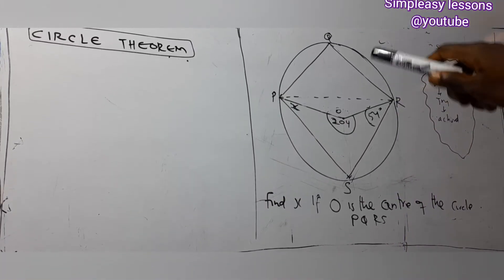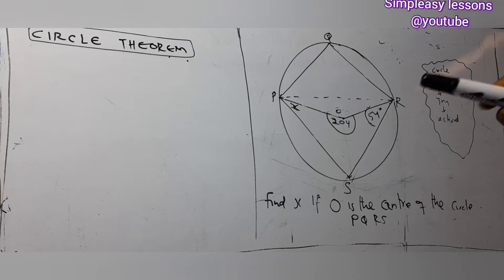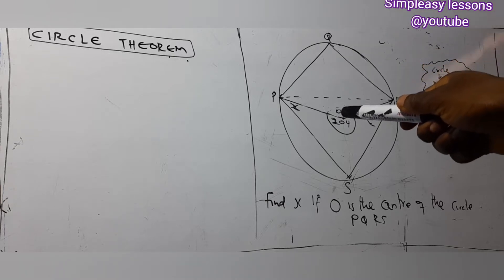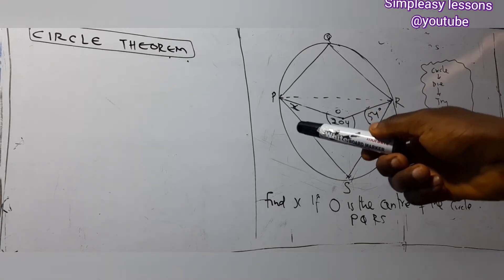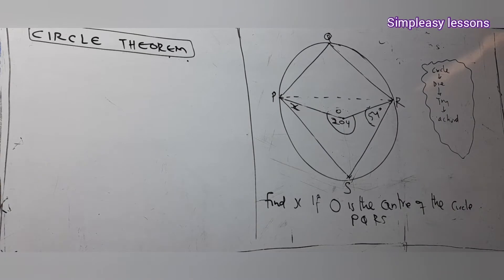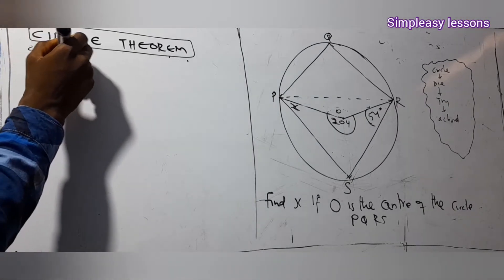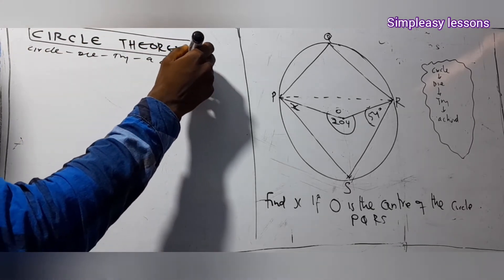In today's discussion we'll be looking at how to apply the mnemonics we have learnt in the previous video to solve questions under circle theorem. The mnemonic is: Circle, Die, Try a Chord — so circle, die, try a chord.